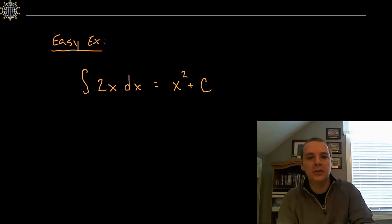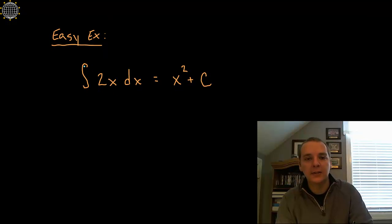So here's a real easy example. Let's say you're going to integrate 2x, and so you think the integral is x squared plus C, but maybe we're not really sure. We'll just kind of play dumb for this one.